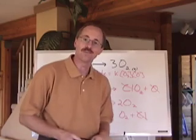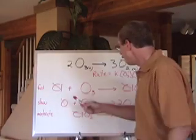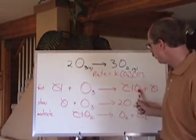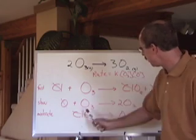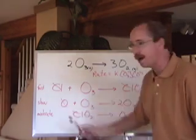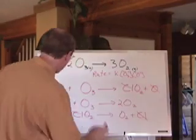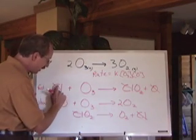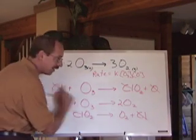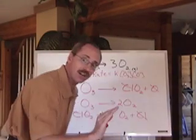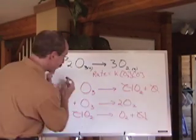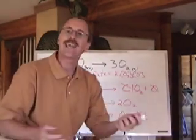And again, because the ClO2 is actually formed and used up, and the O is formed and used up, they're called intermediates. But the Cl, because it actually is present at the beginning and formed at the end, it's not called an intermediate. When something is present and then formed, it's a catalyst.